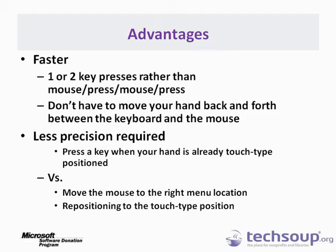Keyboard shortcuts also simply take less precision. If your hand is already in the touch typing position, you can find the keys reliably without thinking — it's programmed into your muscles. But with the mouse, you actually have to place the cursor over an icon or menu to get it in the right spot, which requires eye-hand coordination. For some people, that's a little bit demanding.